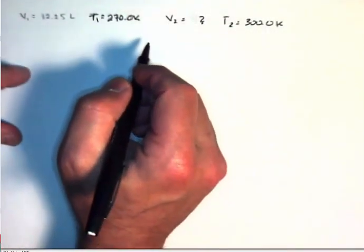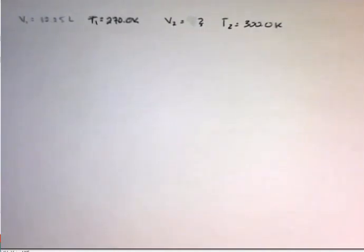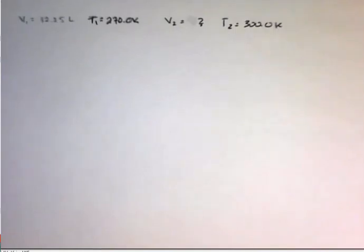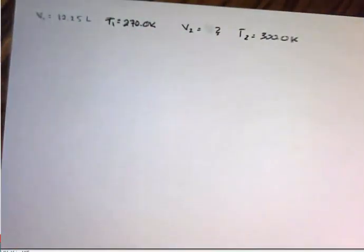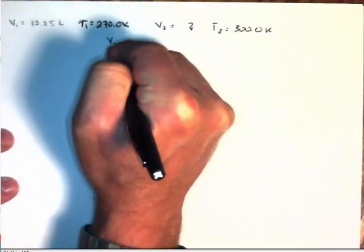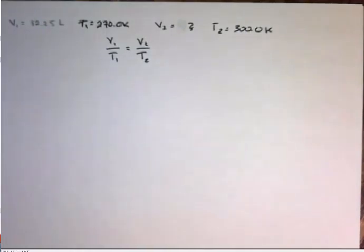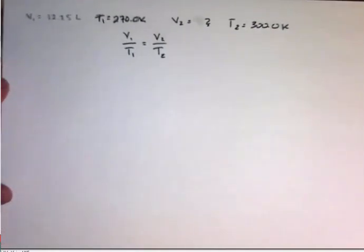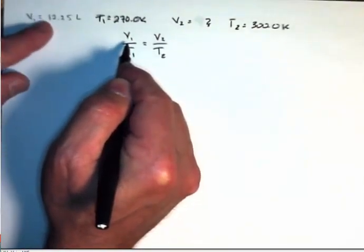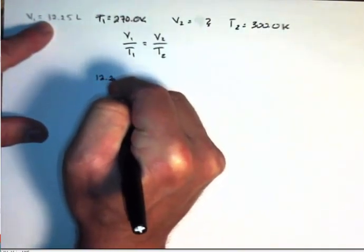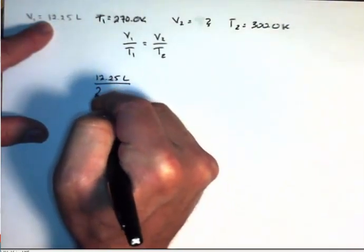Now I'll plug in the values: 12.25 liters over 270.0 K equals V₂ over 300.0 K. To isolate V₂, multiply both sides by 300 K. The K units cancel on the right side, and on the left we get 12.25 liters times 300.0 K divided by 270.0 K. The units of measurement left should match the variable we're seeking — and they do: liters is a measurement of volume.